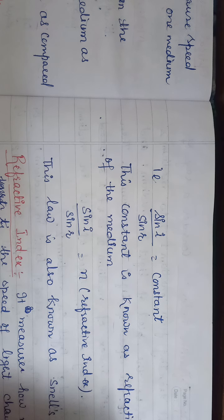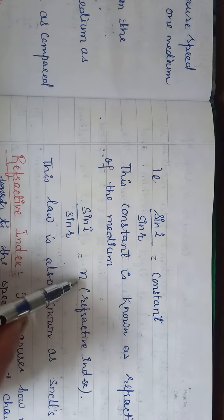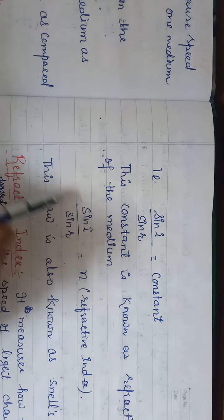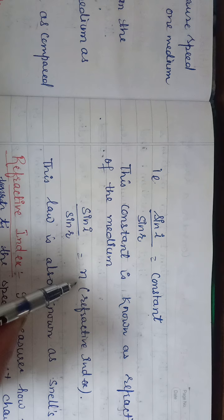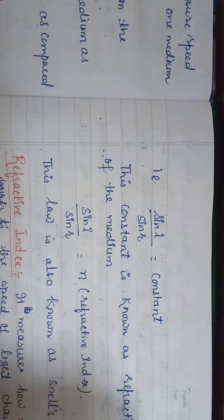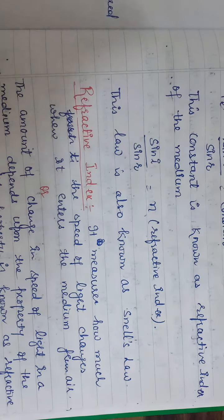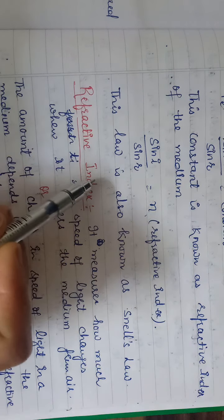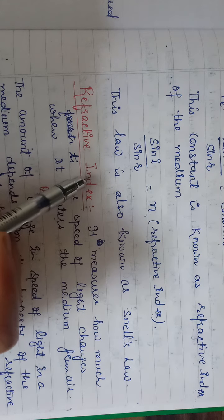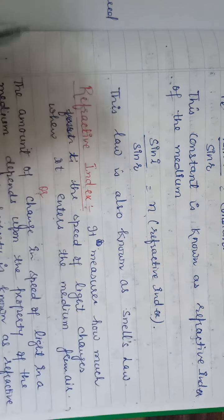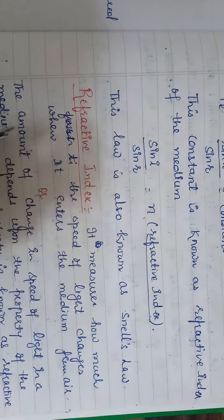This constant is also known as the refractive index, and the refractive index is always denoted by small n. Then we can say that sine i upon sine r equals n, and this is known as the refractive index. This second law of refraction is also known as Snell's law.